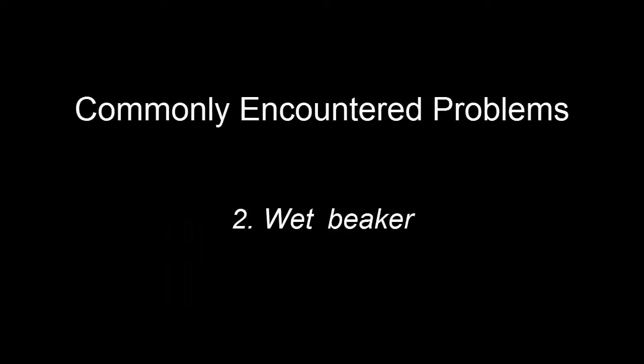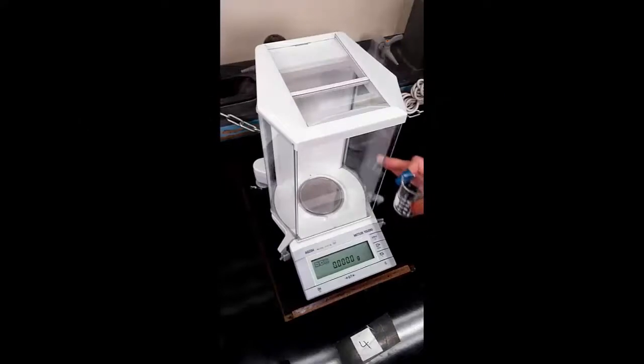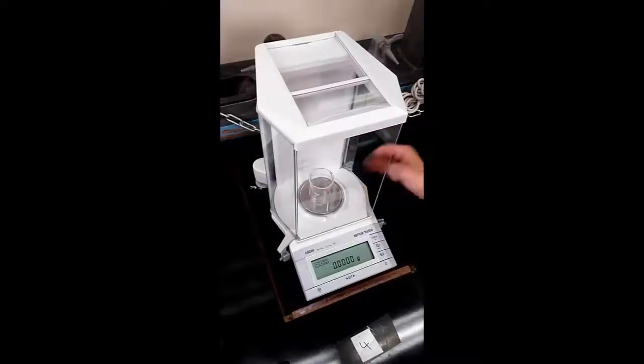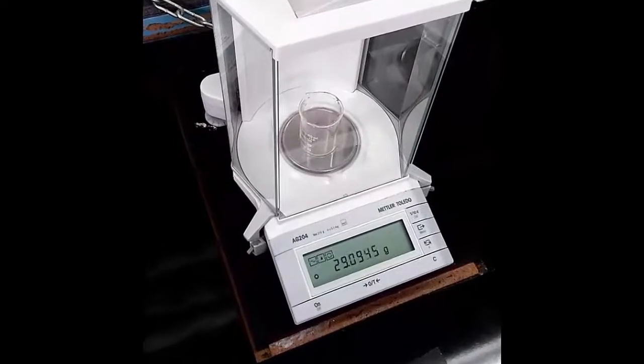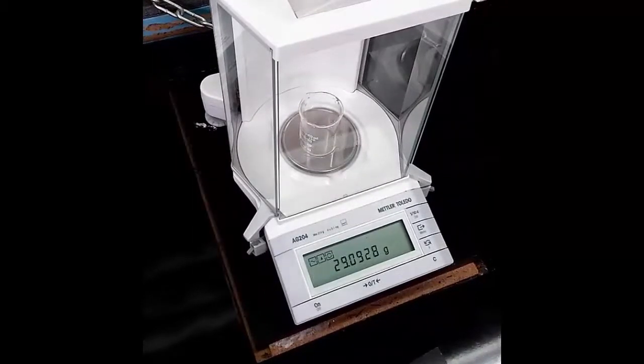2. Wet Beaker. A fraction of a drop of water or other volatile substance on a beaker may cause problems. Balance readings that continually drift downwards generally result from evaporation when either the object being weighed or the balance pan is wet.